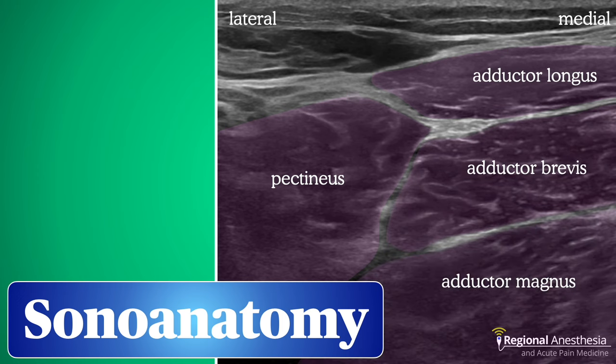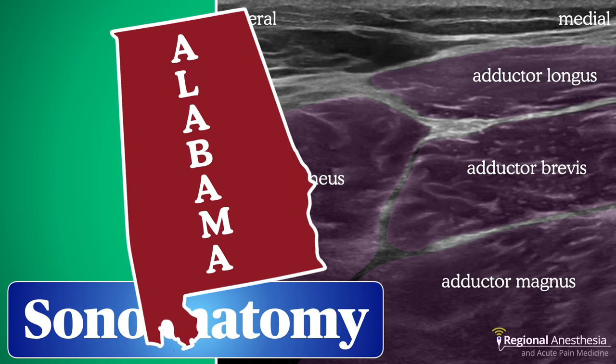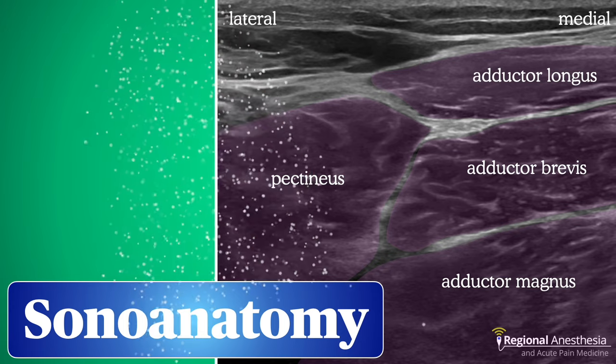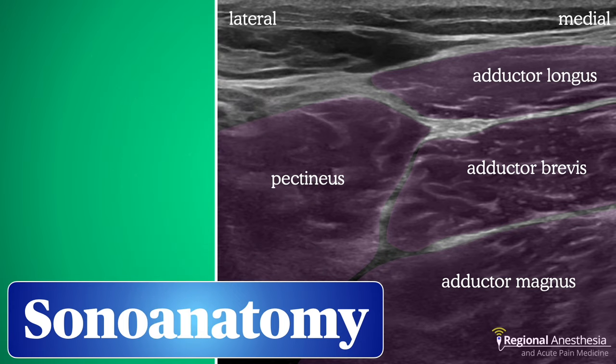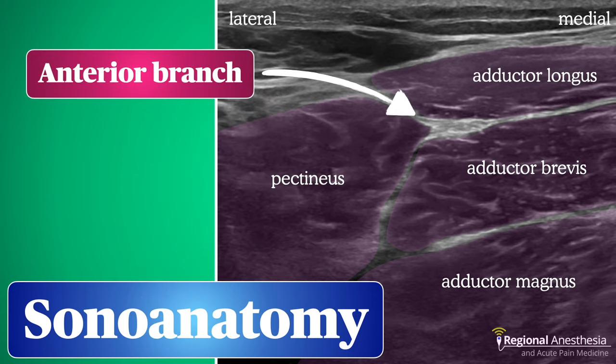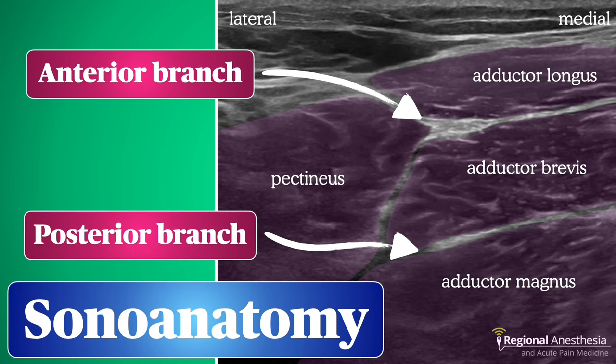A memory aid for remembering the order of the adductor muscles is 'Alabama' — adductor longus, adductor brevis, adductor magnus. Once we've identified the muscles, it's easy to find the nerves. The anterior branch is usually found at the confluence of longus, brevis, and pectineus, and should appear as a hyperechoic structure within that fascial plane. The posterior branch is typically located in the fascial plane between brevis and magnus.